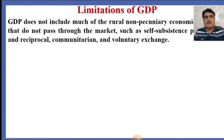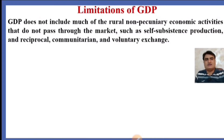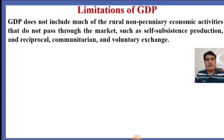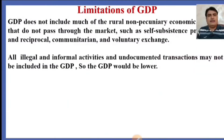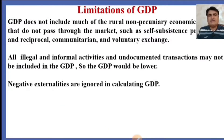These are the limitations. Another limitation is that GDP does not include much of the rural non-pecuniary economic activities that do not pass through the market, such as self-subsistence production and reciprocal communitarian and voluntary exchange made in rural areas. All illegal and informal activities and undocumented transactions may not be included in GDP, so GDP would be lower. Negative externalities are also ignored in calculating GDP.